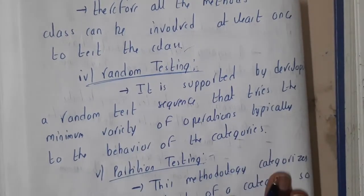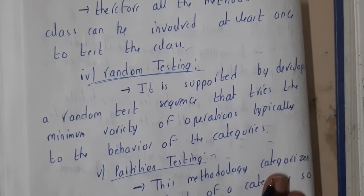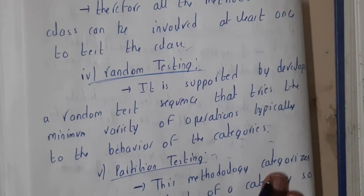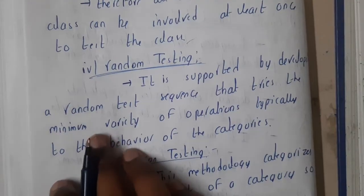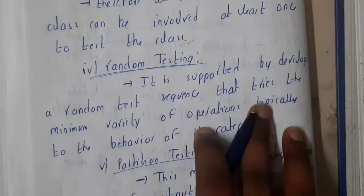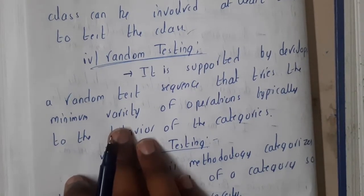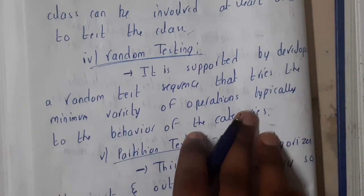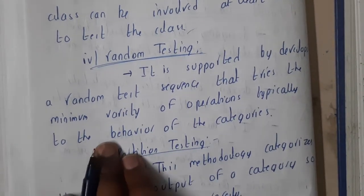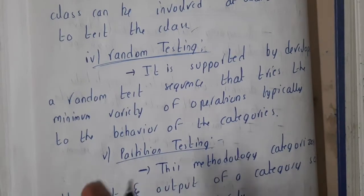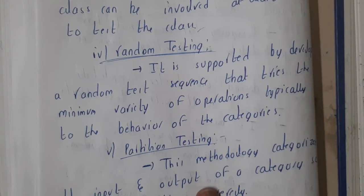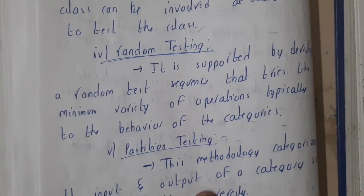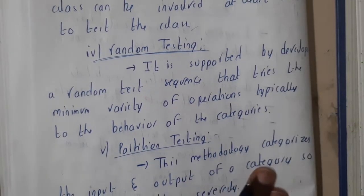The next type is random testing. Here you select some random cases or random variables for testing. It is supported by the developer — a random test sequence that tries the minimum set of operations to observe behavior. Basically, the developer provides multiple test cases, one is selected randomly, and the output is expected to be correct.